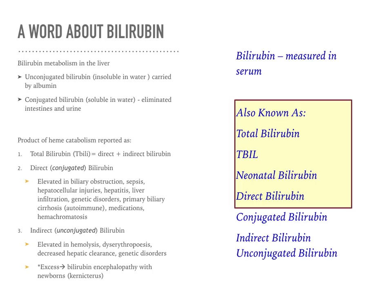Moving on to bilirubin: it comes in two forms — conjugated and unconjugated. Unconjugated bilirubin is insoluble in water and is carried by albumin. Conjugated bilirubin is soluble in water and eliminated in the intestines and urine. We test bilirubin with total and direct values — total bilirubin is direct plus indirect. Direct (conjugated) bilirubin is elevated in biliary obstruction, sepsis, hepatocellular injury, hepatitis, and liver infiltrates. Indirect (unconjugated) bilirubin is elevated in hemolysis and decreased hepatic clearance, as well as some genetic disorders.